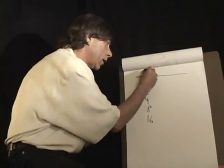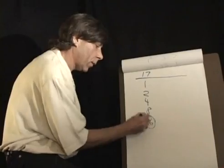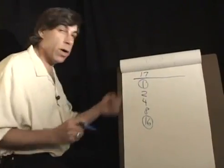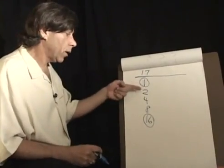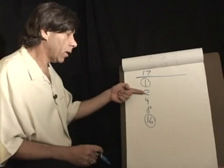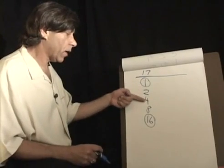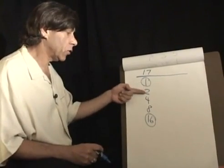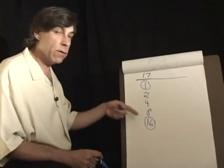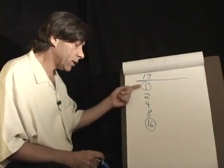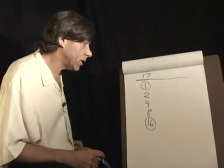For example, if we wanted to choose the number 17, that's 16 plus 1. So I can count 1, 2, 1 plus 2 make 3, 4, 1 plus 4 make 5, 2 plus 4 make 6, 1 plus 2 plus 4 make 7, 8, and so forth. And so any number can be represented by the sum of elements of this sequence.